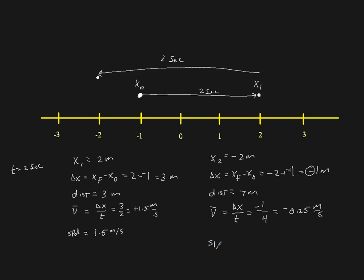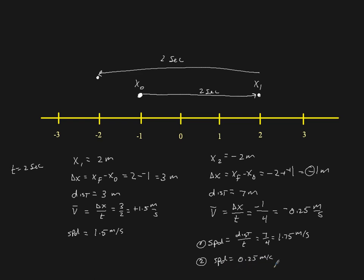The speed, then, is going to be the distance divided by time. The total distance was 7 divided by 4 seconds, or 1.75 meters per second — that is definition 1. Definition 2: speed would equal 0.25 meters per second, but that doesn't really make sense in this context. In the next video, we're going to take a look at the different ways that we can represent motion.